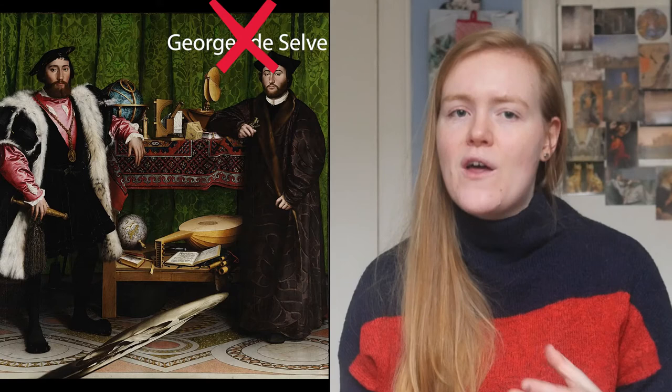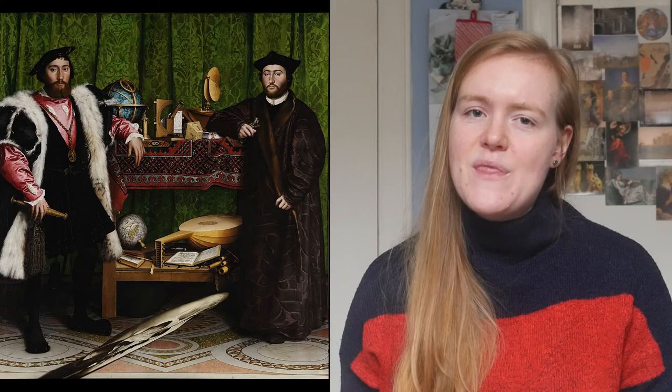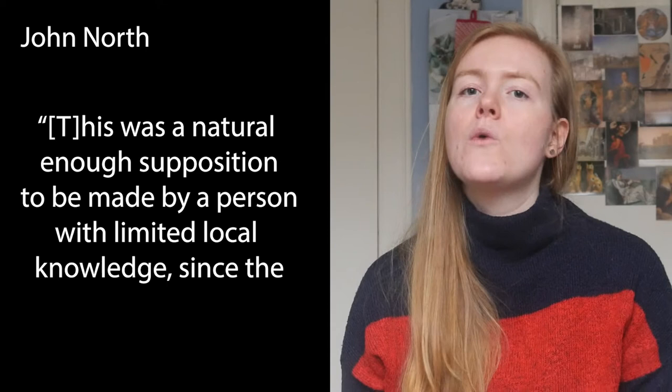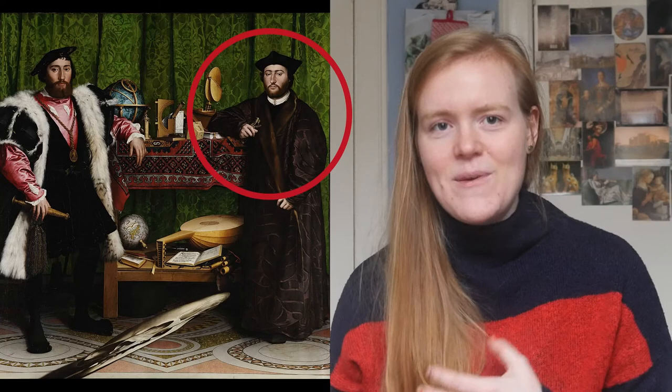One art historian thinks the man on the right is not Georges de Selve but Jean's brother François, the Bishop of Auxerre, because he was a well-known patron of the arts with a known interest in mathematical instruments. The earliest manuscript of the painting — an inventory of the Chateau de Polency, their castle — actually confirms this, although North says this was a natural enough supposition to be made by a person with limited local knowledge, since the two brothers lived on the family estates together at the end of their lives, but it's almost certainly mistaken. He points to a letter François wrote Jean in 1533 where he talks about meeting the Pope quite soon and makes no mention of visiting London. Unlike the man on the right of the picture, François was older than Jean de Dinteville, whereas the man in the painting is only 24 or 25.